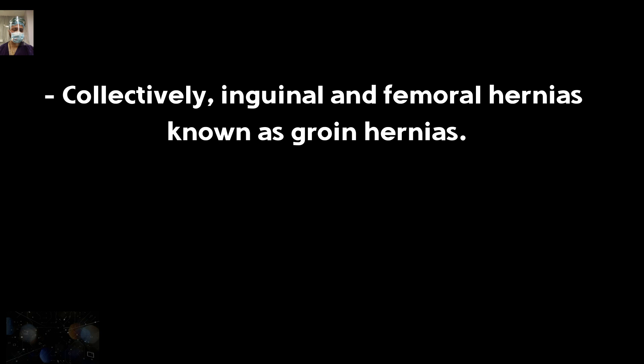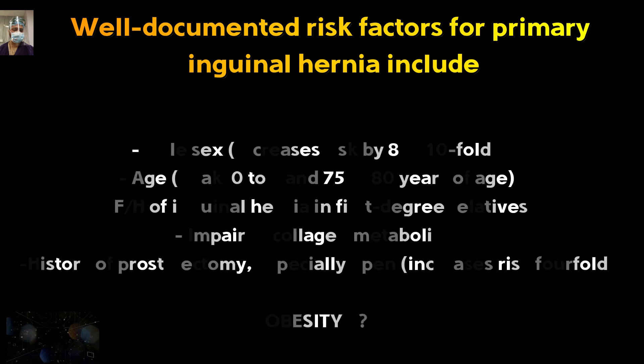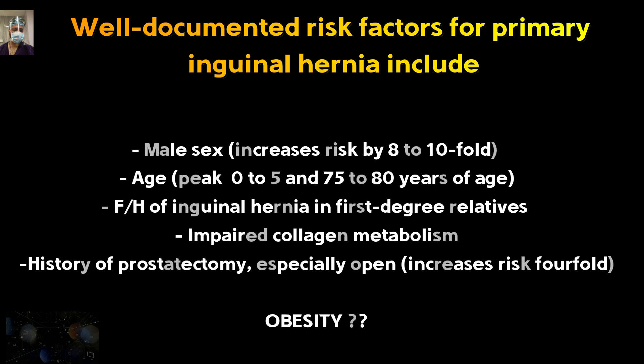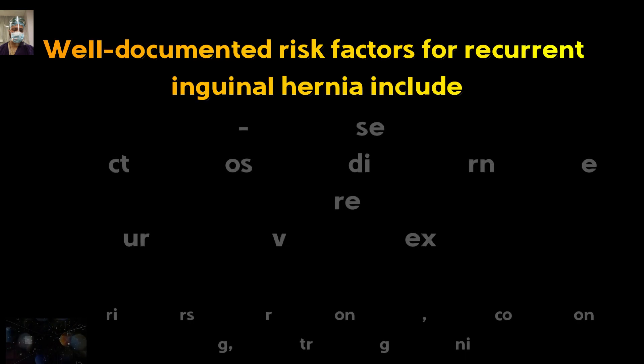Collectively, inguinal and femoral hernias are labeled as groin hernias. The well-documented risk factors include: male sex, with an eight-to-tenfold higher chance; age, with two peaks described in literature — zero to five years (pediatric hernia) and 75 to 80 years; family history of groin hernia in first-degree relatives; systemic diseases involving impaired collagen metabolism; and history of prostatectomy — especially open prostatectomy — which carries a fourfold increased risk. Regarding obesity, the literature is inconclusive.